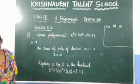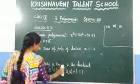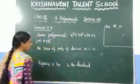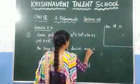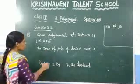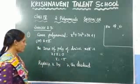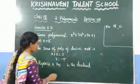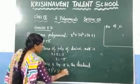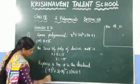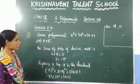The fourth question: divide the same polynomial x cubed plus 3x squared plus 3x plus 1 by x plus 5. Find the zero of the divisor: equate x plus 5 to 0, giving x equals minus 5. Substitute minus 5 into the dividend: minus 5 whole cube plus 3 into minus 5 whole square plus 3 into minus 5 plus 1. This expression gives the remainder.